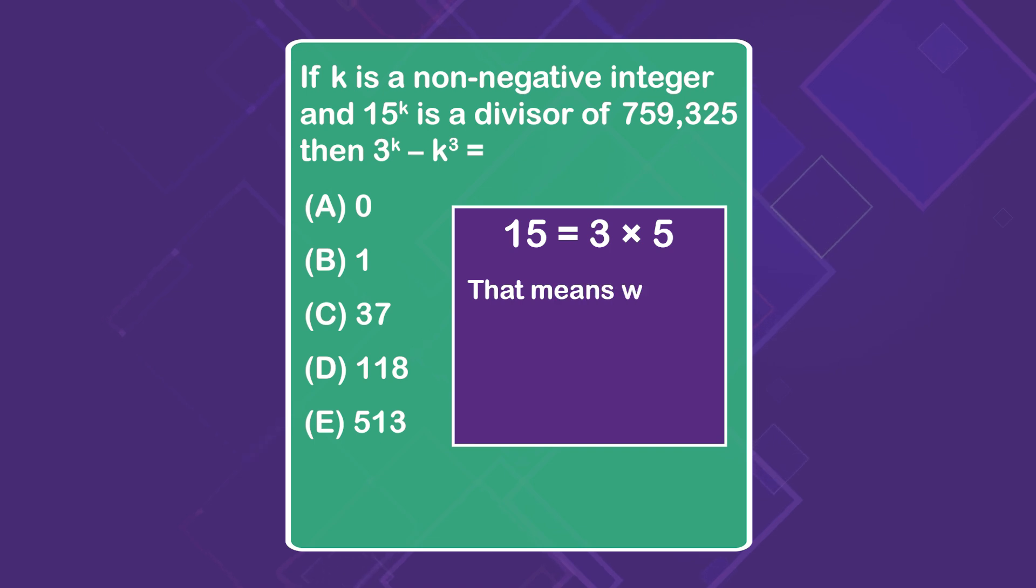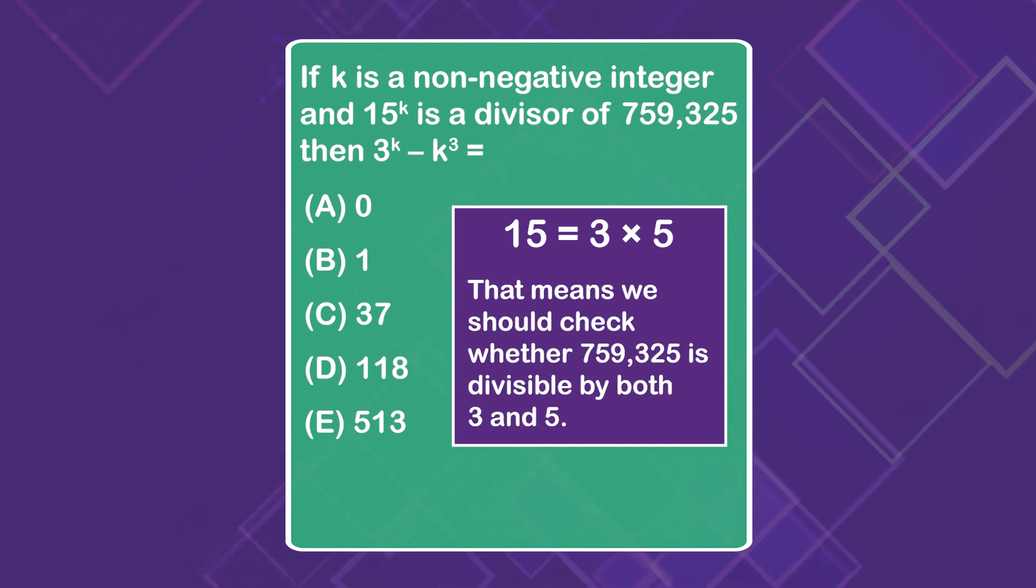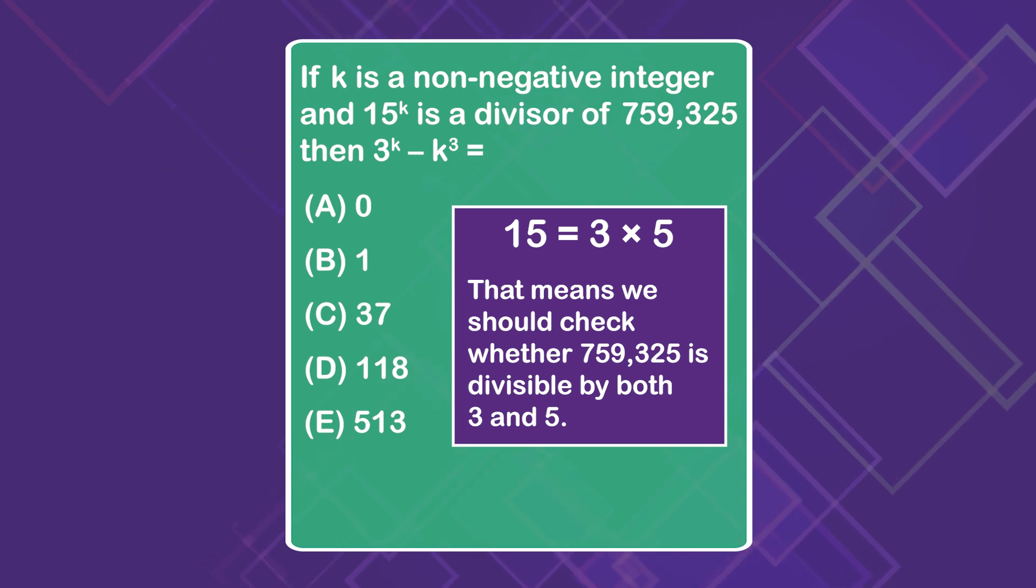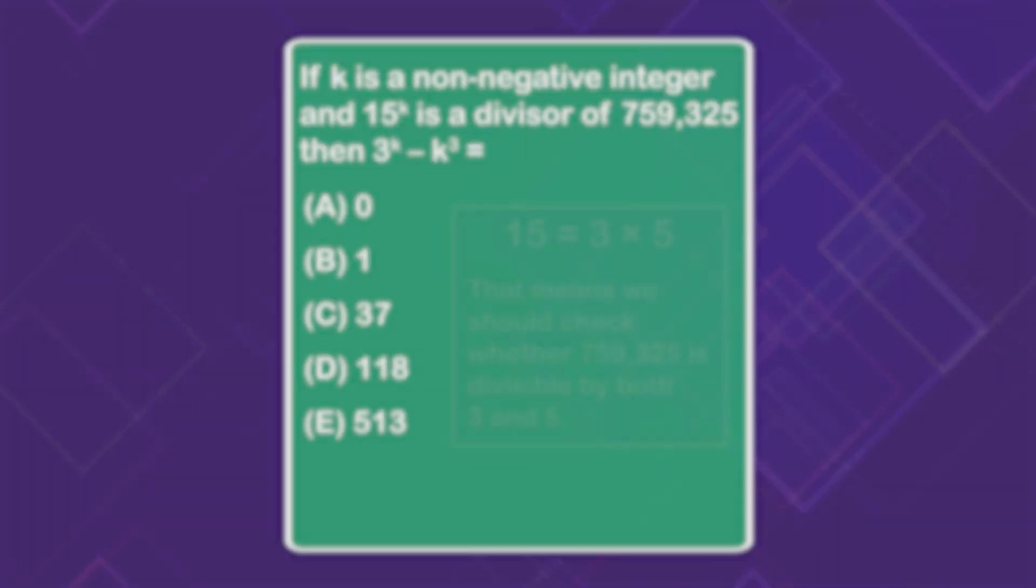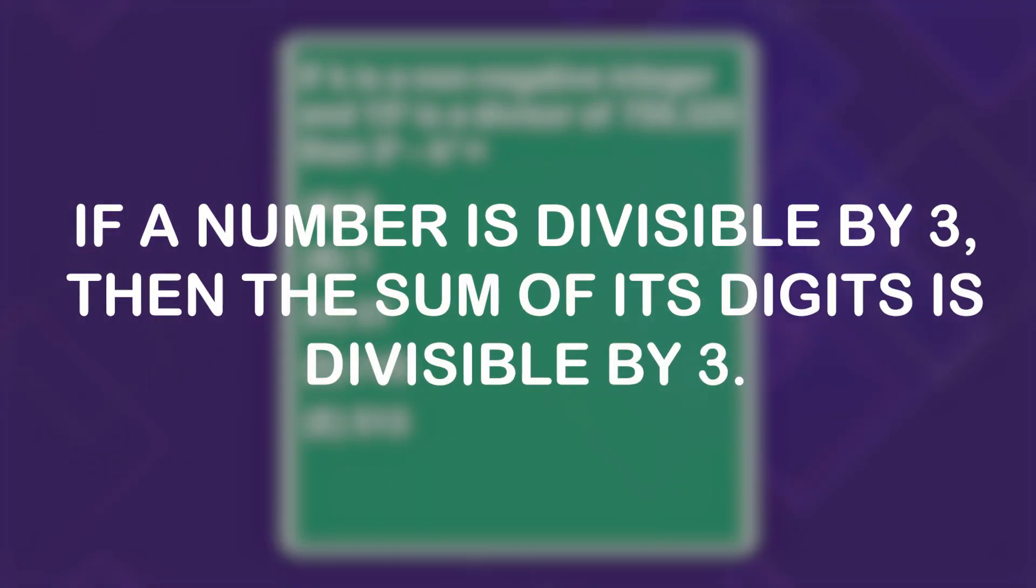What does that mean for us? That means we should check whether 759,325 is divisible by both 3 and 5. Divisible by 5 is pretty easy—it ends in either 0 or 5 and so that checks out. What about 3? Our divisibility rule is if the number is divisible by 3, then the sum of its digits is divisible by 3.